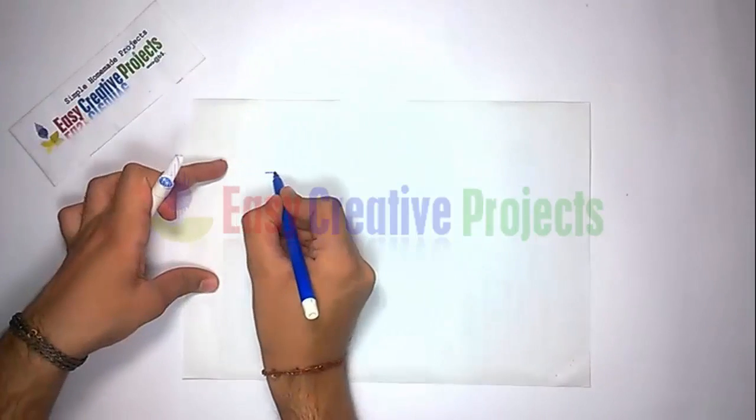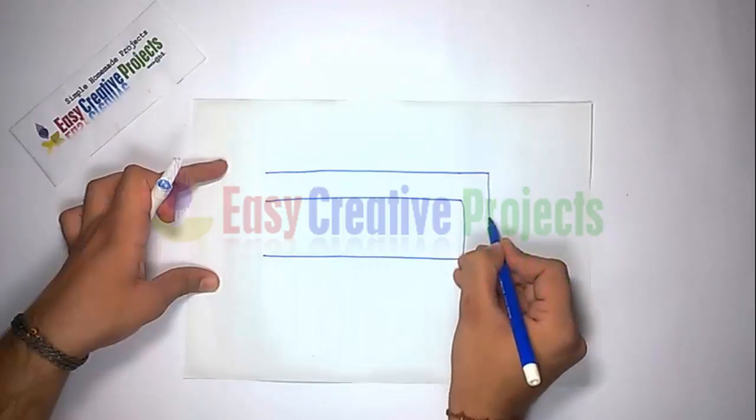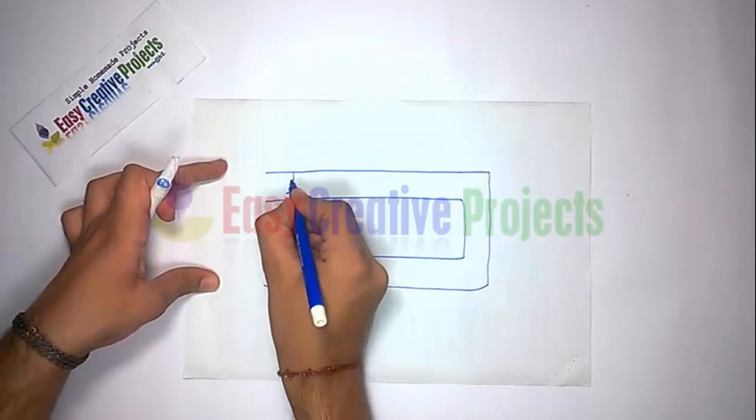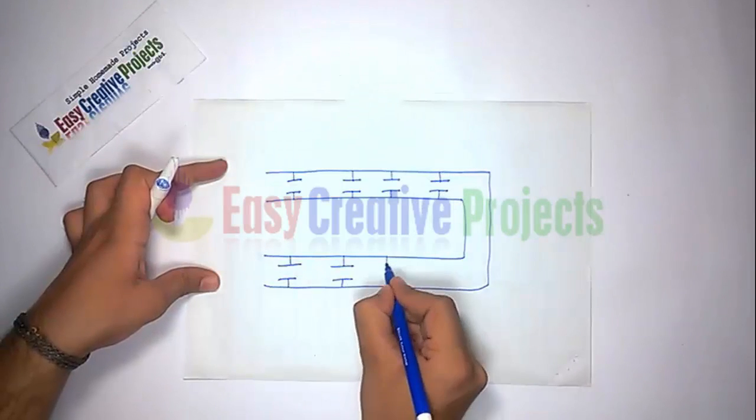First make circuit diagram. Connect 8 capacitors in parallel circuit. All capacitor negative side connect with one wire and positive side connect with second wire. Like diagram.